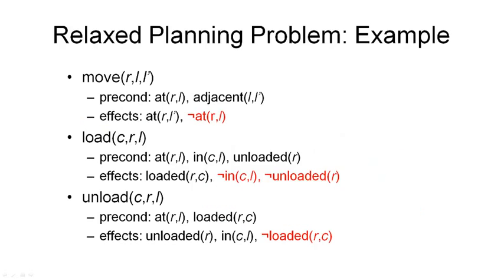Here is the idea of the relaxed planning problem applied to the example we have used earlier. We see the three operators from our simplified dock worker robot domain where robots had cranes to load and unload containers. To compute the relaxed planning problem, we simply remove all the delete lists — the negative effects — from all the operators. So we remove 'not at R L' from the first operator, then 'not in C L' and 'not unloaded R' from load, and 'not loaded' from the final operator. It's that simple.